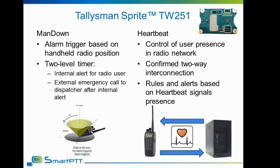A second timer will then start. Upon ending of the second timer, if the alarm was not cleared, the radio will trigger the alarm and start an emergency call to the dispatcher. This feature can be used to monitor the state of lone workers. For example, if someone lost consciousness and fallen on the ground, the radio will send the emergency call after the timers expire to notify the dispatcher that this user is in an emergency state.